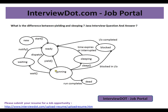When a running thread calls its yield method, it goes to the ready state — that means the runnable state. The same thread can be moved back to the running state at any point in time by the JVM thread scheduler. But whenever a running thread goes to sleep, it goes to the waiting state.